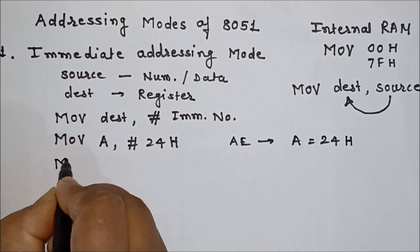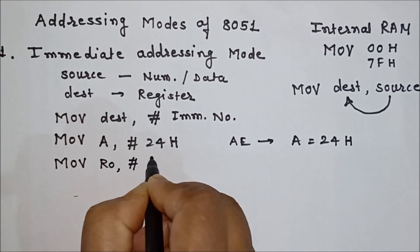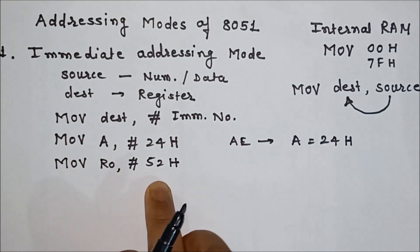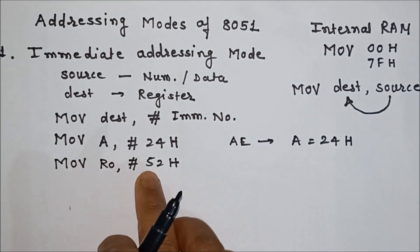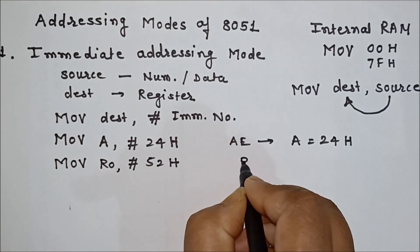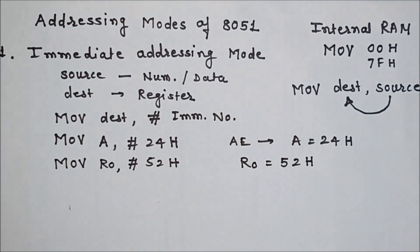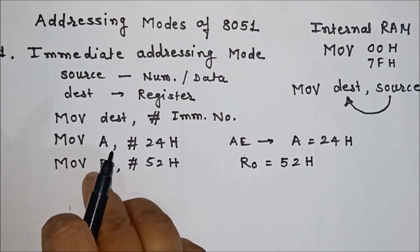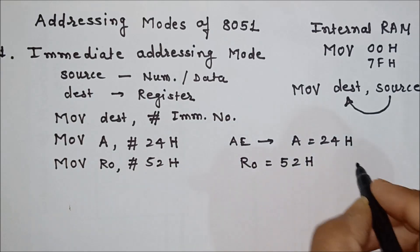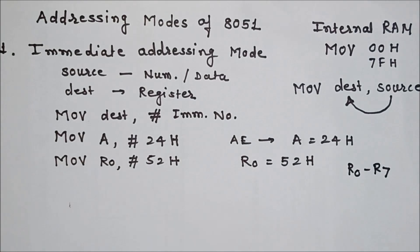The same can be used for a register. For example, MOV R0, #52H. After execution of this instruction, 52H will be stored in register R0, so R0 will be loaded with the value 52H. This immediate addressing mode instruction can be used for any register from R0 to R7 of the register bank.